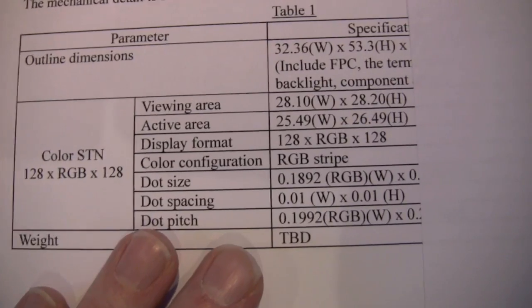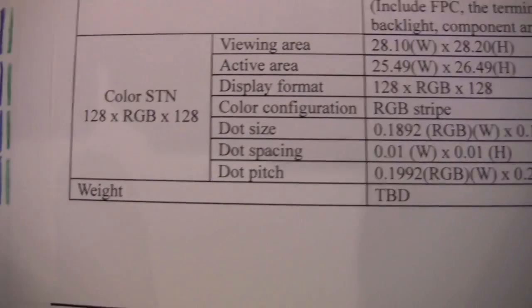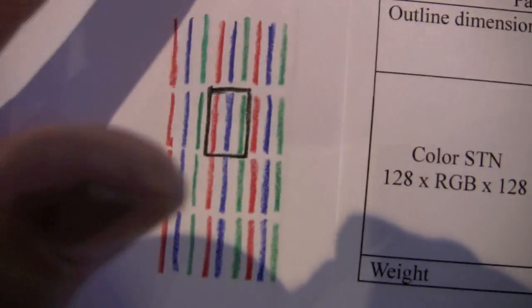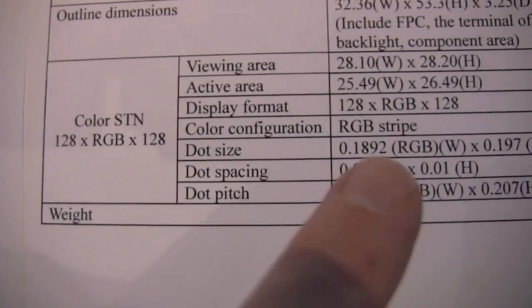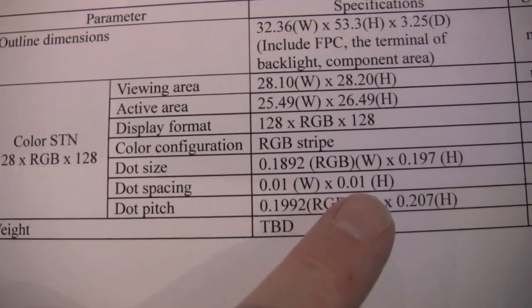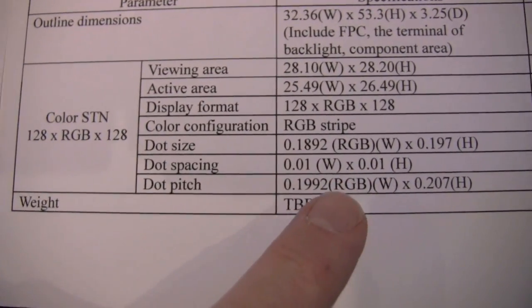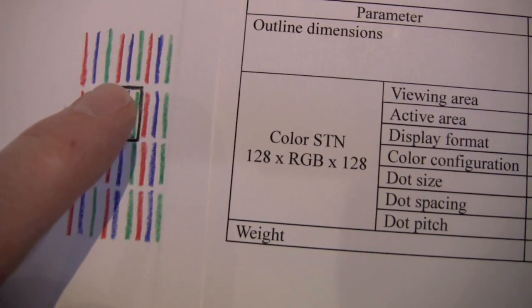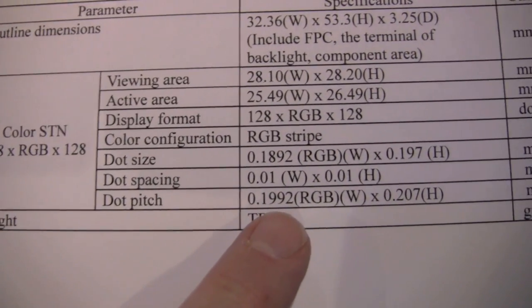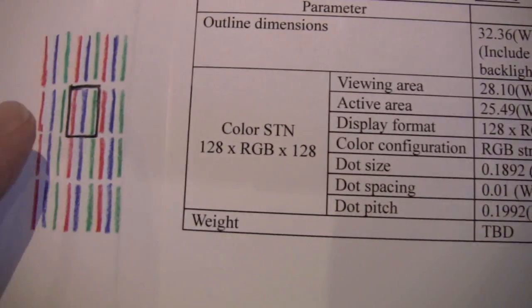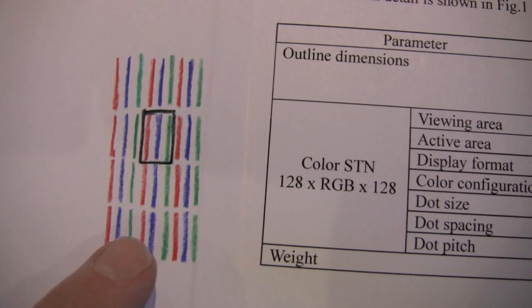We actually have a size for this particular pixel. Pixels are often called dots, and so it turns out that each dot, which would correspond to the region, not including the black rectangle, but just from the tips of the top of the filament to the bottom of the filament of a rectangular size of 0.1892 by about 0.197. This is square, and I did not draw it square. I drew it kind of rectangular. The dot spacing is the space between one filament to the filament above it or to the left of it, and that turns out to be 0.01 millimeters. And the dot pitch is then the entire size of the pixel, including the black space. If I imagine that black rectangle being laid over the entire array of subpixels here, this would then fill up the entire geometry.